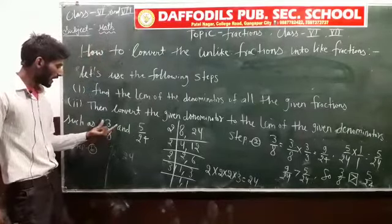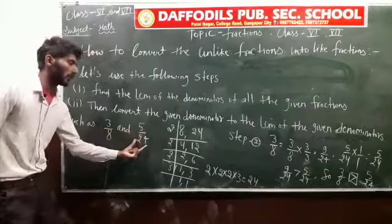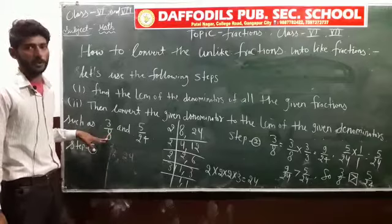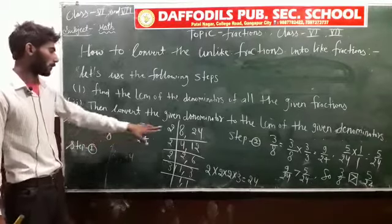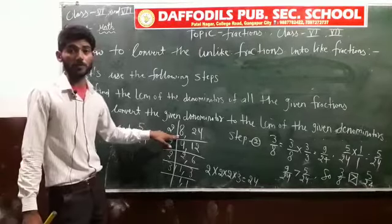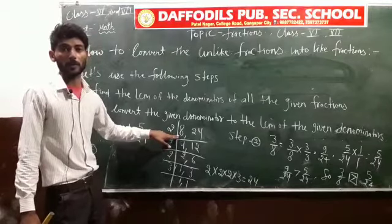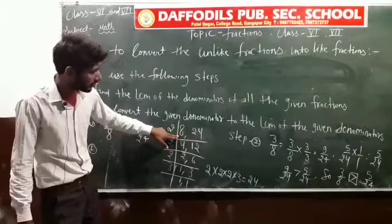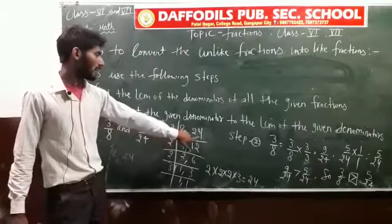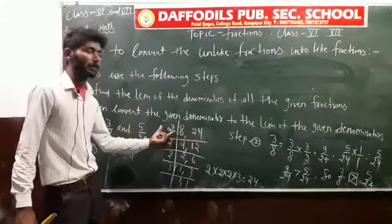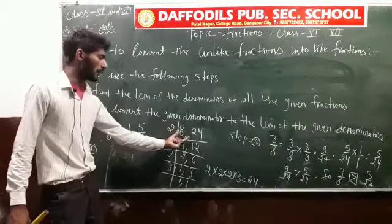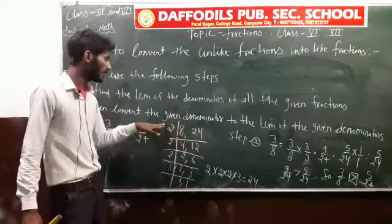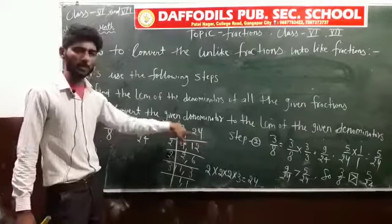The first example is 3/8 and 5/24. So first of all, you have to find the LCM of the denominators. I hope you already know about the LCM topic — it is a very easy topic. So for 8 and 24, we start dividing by 2.